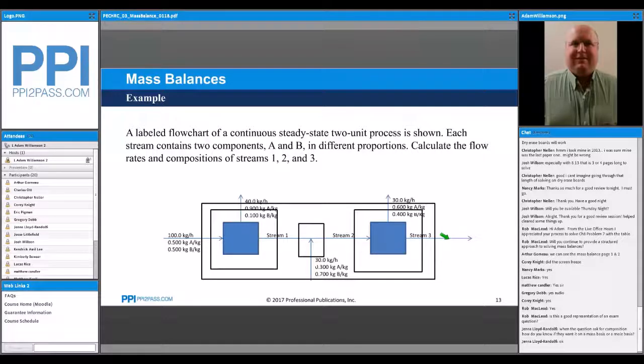There's two unknowns in stream three: the flow rate of A, the flow rate of B, and we have two mass balances. So we could technically start by solving for stream three using an overall balance. That's a valid balance to use because we have two equations, two unknowns.